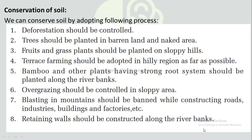Terrace farming should be adopted in hilly regions. Bamboo and other plants with a strong root system should be planted along river banks. Overgrazing should be controlled in sloppy areas. Blasting in mountains should be banned. While constructing roads, industries, buildings, and factories, retaining walls should be constructed along river banks.